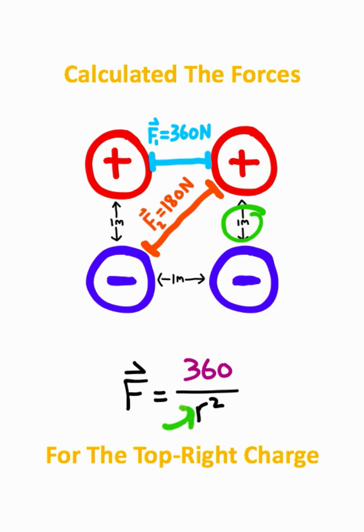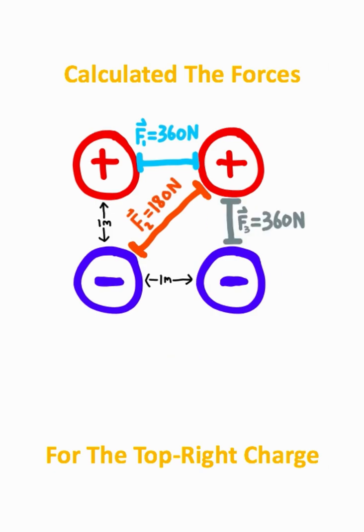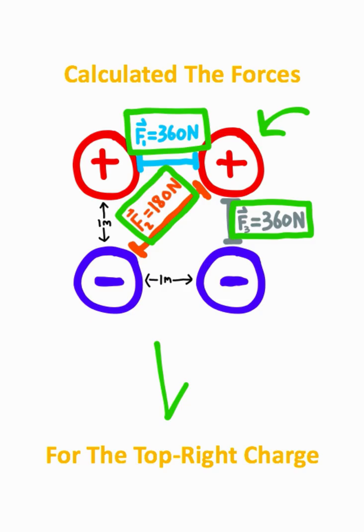The last thing I need to do is take this one meter and plug it in for R. I should once again get 360 newtons of force. So these are the three magnitudes of force acting on the top right point charge.